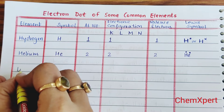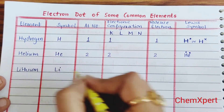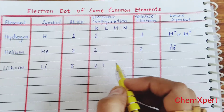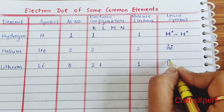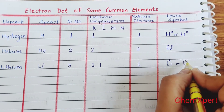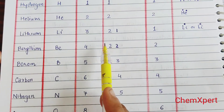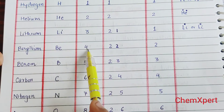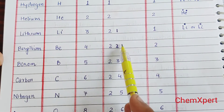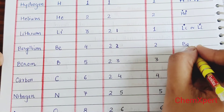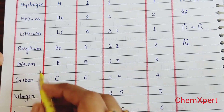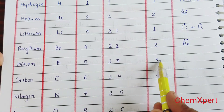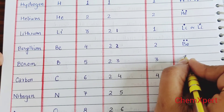Lithium, symbol Li, atomic number 3, has configuration 2, 1. The outermost L shell contains 1 electron, so the valence electron is 1. We write Li with 1 dot or 1 cross. Beryllium, symbol Be, atomic number 4, has configuration 2, 2. The valence electron is 2, so the symbol is written with 2 dots. Boron, symbol B, atomic number 5, has configuration 2, 3. The valence electron is 3, so we write the symbol with 3 dots.